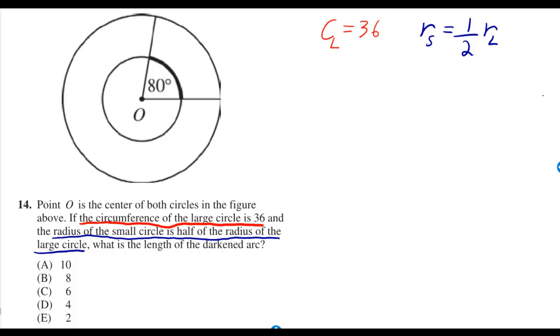Point O is the center of both circles in the figure above. If the circumference of the large circle is 36 and the radius of the small circle is half of the radius of the large circle, what is the length of the darkened arc?